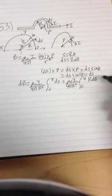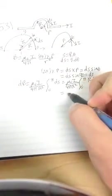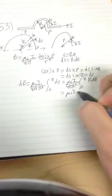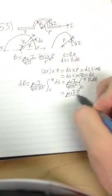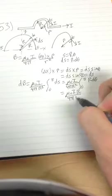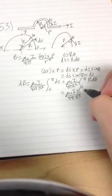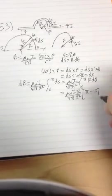Integrate with respect to theta, that's pretty simple. You'll get mu naught i times r, the constant, over 4 pi r squared times pi minus 0.